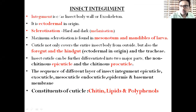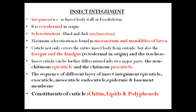Hello dear students, good afternoon. Today's topic is insect integument, which is a very important topic because many questions in your final examination — mostly objective type — are very difficult to answer correctly. The insect integument or insect body wall is also called the exoskeleton. It is the outermost covering of the insect, and it is ectodermal in origin — not mesodermal, not endodermal.